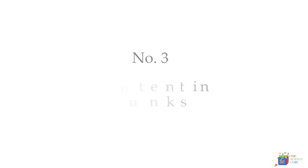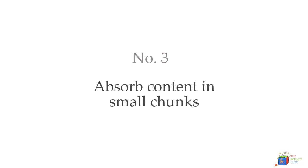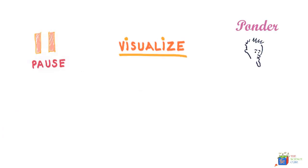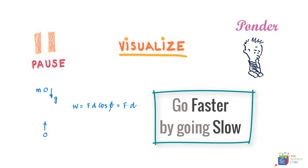So that brings us to number three, and that is absorb contents of a tutorial in small chunks. Do not try to read everything in one go and expect that you'll understand everything. You'll really need to pause, visualize, ponder over what you read, and sometimes scribble your thoughts, equations, or diagrams on a piece of paper, and you'll see how much faster you will understand by going slow.